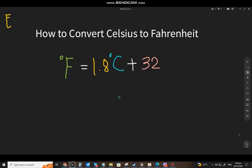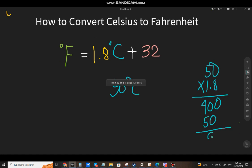Now for example we have 50 degrees Celsius and you want to convert it to Fahrenheit, so multiply it first by 1.8 like so and that will be 8 times 0, 0, 8 times 5, 40, 1 times 0 and 1 times 5 and you add them in one decimal place, that will be 90.